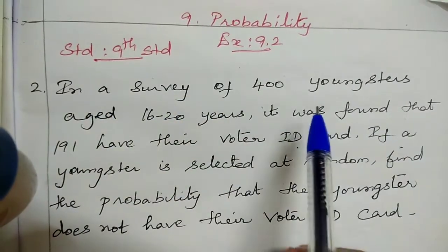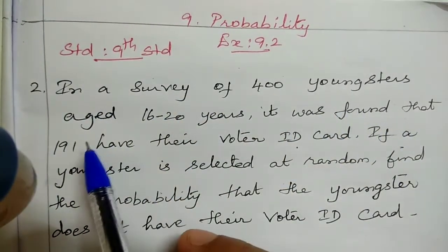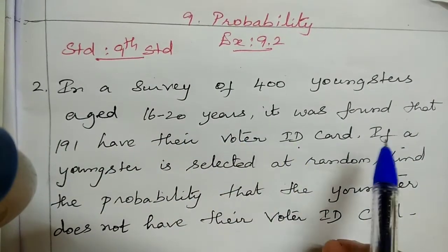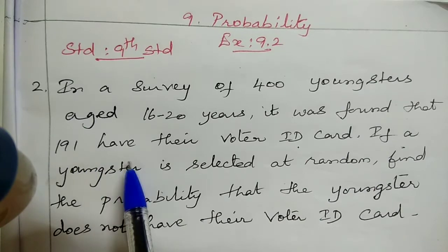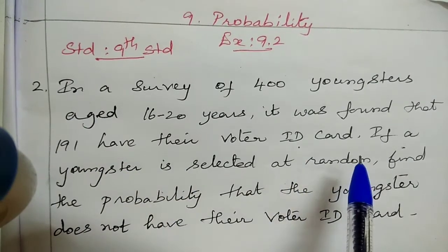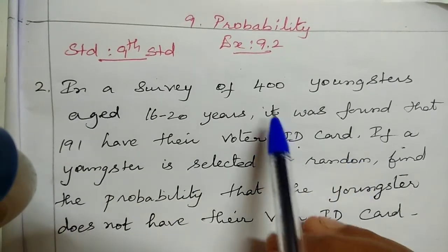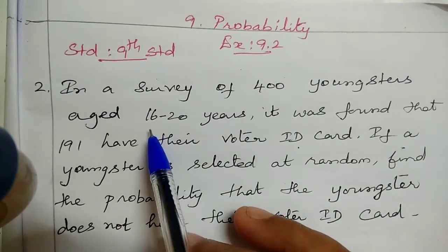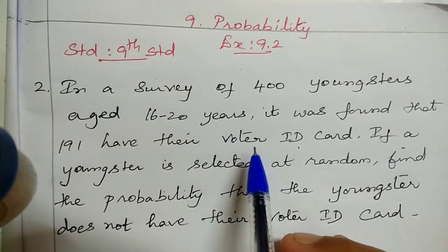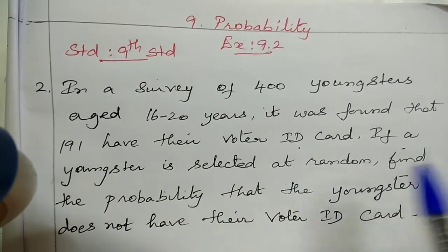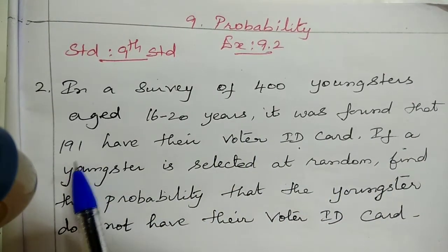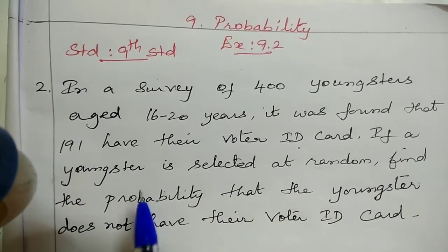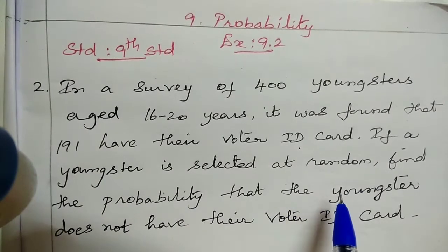In a survey of 400 youngsters aged 16 to 20 years, it was found that 191 have their voter ID card. If a youngster is selected at random,